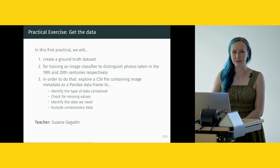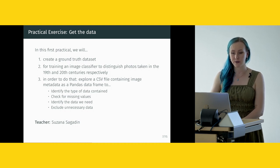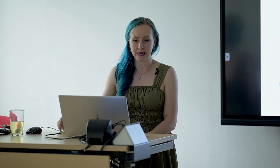The first practical exercise is called Get the Data. We will create a ground truth dataset for training an image classifier to distinguish photos taken in the 19th and 20th centuries respectively — a binary classification task. There are many different types of computer vision problems, not just binary classification. To achieve this, we will first explore a CSV file containing image metadata as a pandas DataFrame in Python. This course expects a basic working knowledge of Python and pandas.